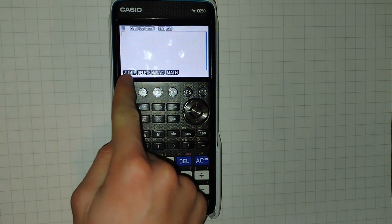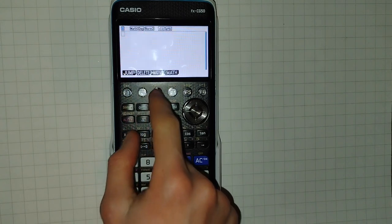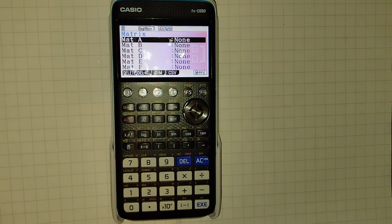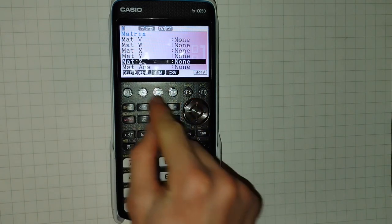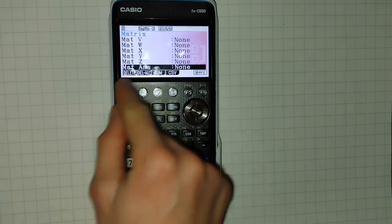Once you're in the mode, from this initial menu we're going to click F3, and this lets us create some matrices, which are numbered from A down to Z, plus matrix ans.